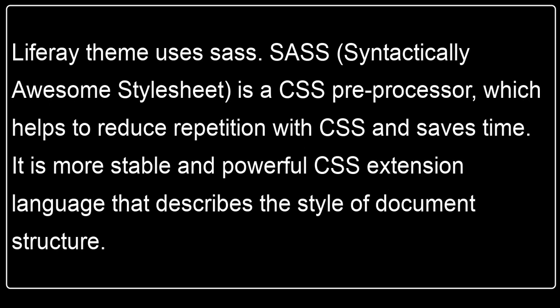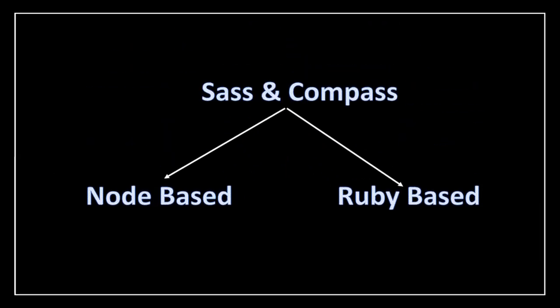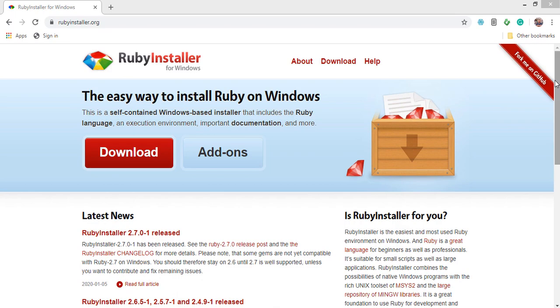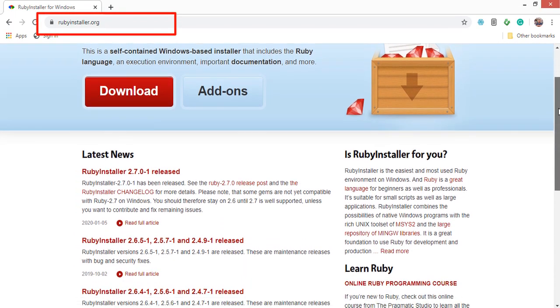To use SASS on Windows, you must use either SASS from Node or SASS from Ruby. Since Node SASS indirectly requires Visual Studio, developers who are not already using Visual Studio may opt to use Ruby-based SASS and Compass instead of Node SASS. Therefore, before installing SASS and Compass on Windows, I am going to install Ruby. After installing Ruby, we can run the gem command to install SASS and Compass. Download the Ruby installer from here and install it. After installation of Ruby, follow the next step.